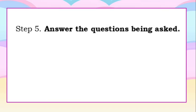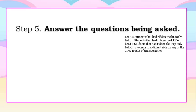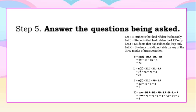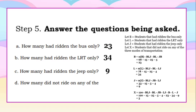Now for our last step, we answer the questions. How many had ridden the bus only? The answer is 23. How many had ridden the LRT only? The answer is 34. How many had ridden the Jeep only? The answer is 9. How many did not ride any of the three modes of transportation? The answer is 5.